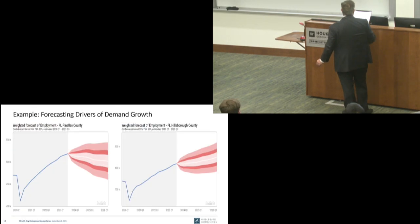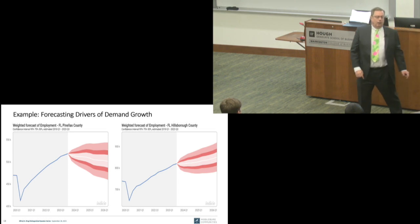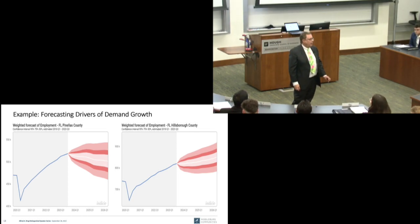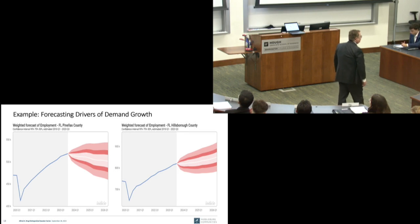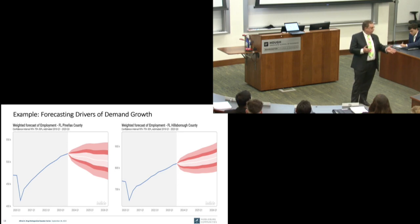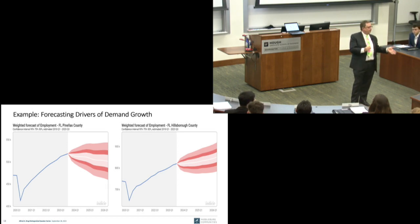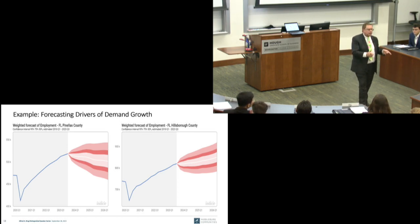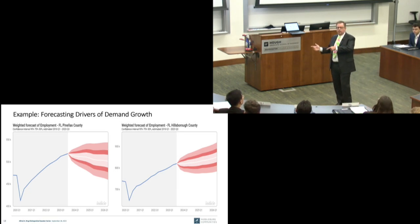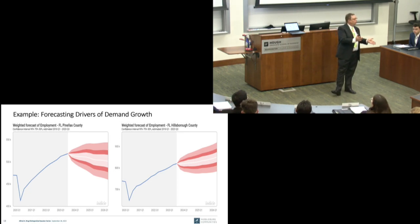We subscribe to forecasts from Oxford Economics, which produces forecasts of key demand drivers like employment growth and population growth by age group. I'm not interested in population growth in the 65-and-up cohort. I'm interested in growth in the 25-to-35 or 25-to-40 age group — those are the people looking to rent an apartment rather than buy a house or enter assisted living.